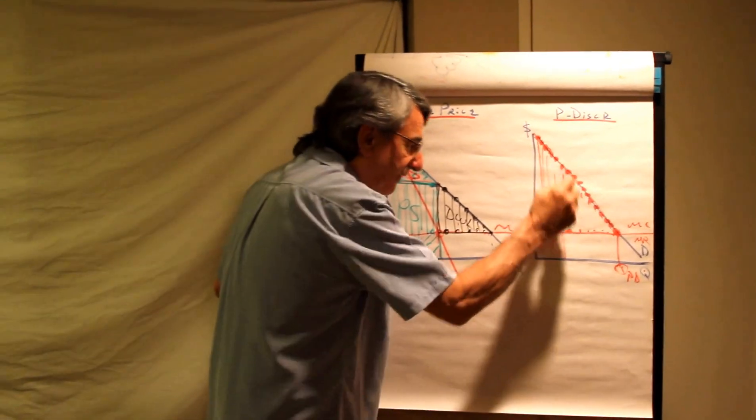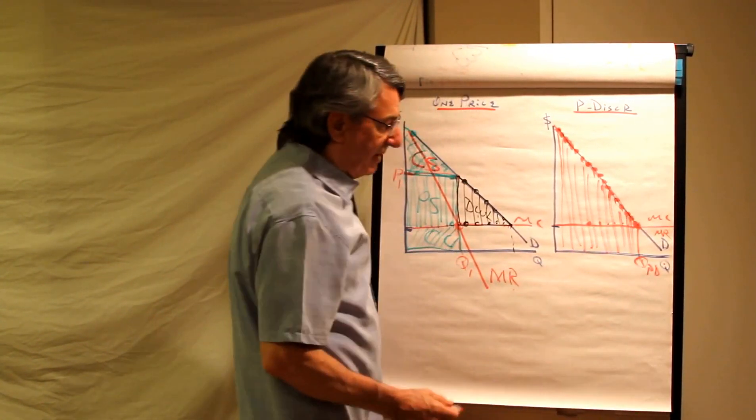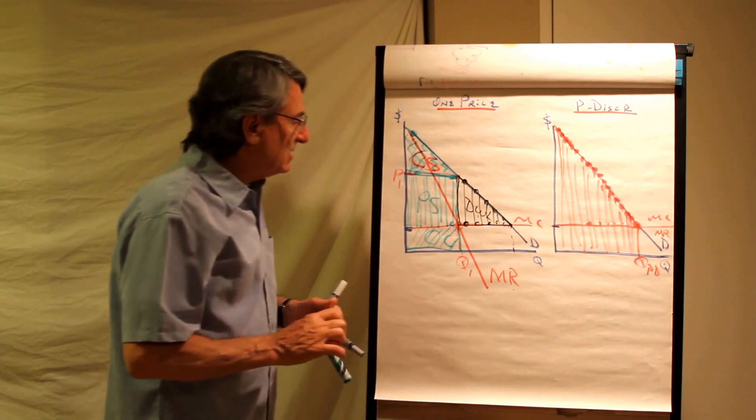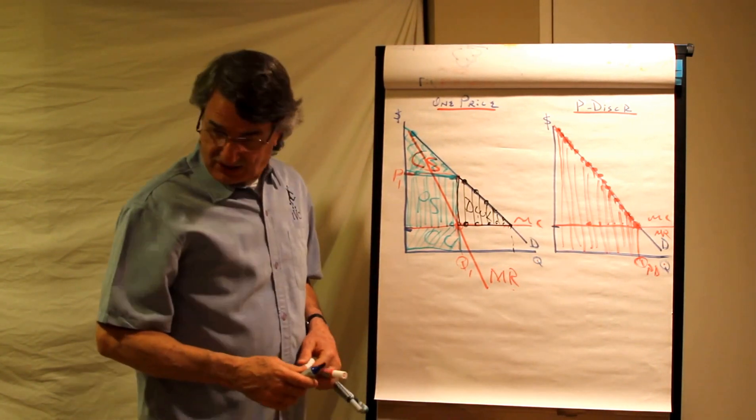Everybody gets charged a different price with perfect price discrimination. So this entire red stripey area is total revenue to this firm. Do you see that it's bigger?